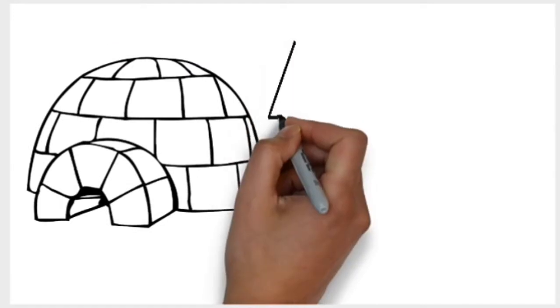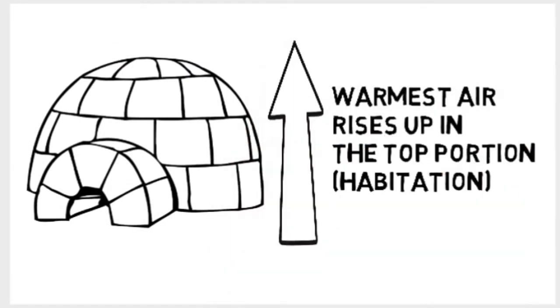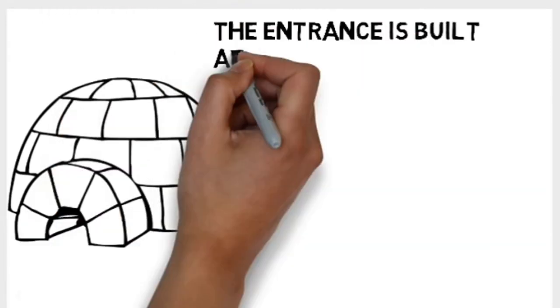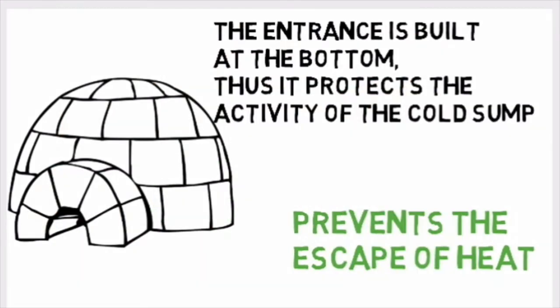Consequently, all the warm air rises to the portion where the people sleep. The entrance to the igloo is traditionally built at the bottom, another feature that protects the activity of the cold slump and prevents the escape of warm air.